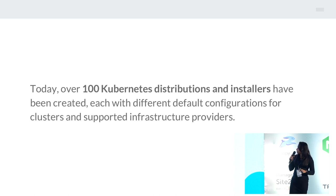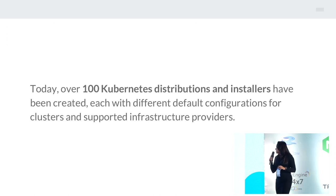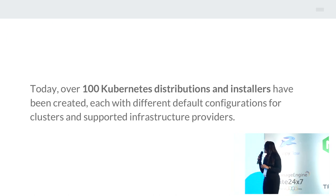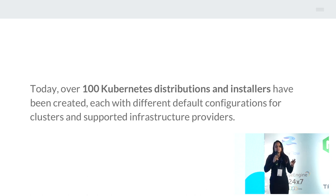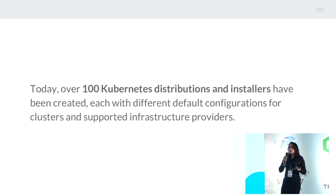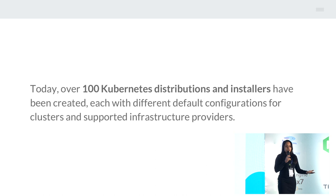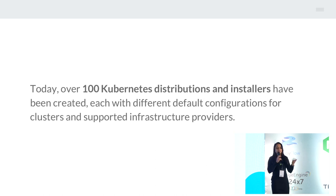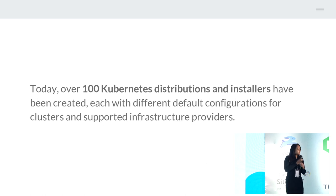An important fact: more than 100 Kubernetes distributions and installers have been created to date — not just Cluster API GCP, Cluster API AWS, or Cluster API Azure, but more than 100 Kubernetes distributions, all coming with a template. You just need an environment, pick up the template, and you're ready to go with your Kubernetes cluster in a production environment, with all control in your hands.